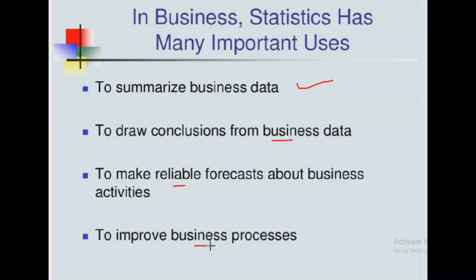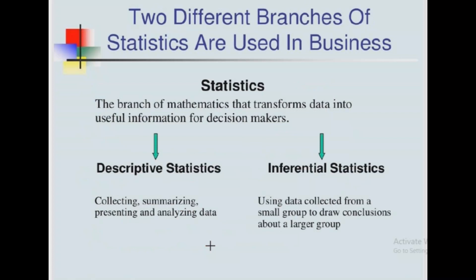In statistics there are two general branches. First, statistics itself is defined as the branch of mathematics that transforms data into useful information for decision makers. Statistics is a tool that enables us to convert data into useful information for business decisions, so that decision makers can use data to understand future changes in their business.